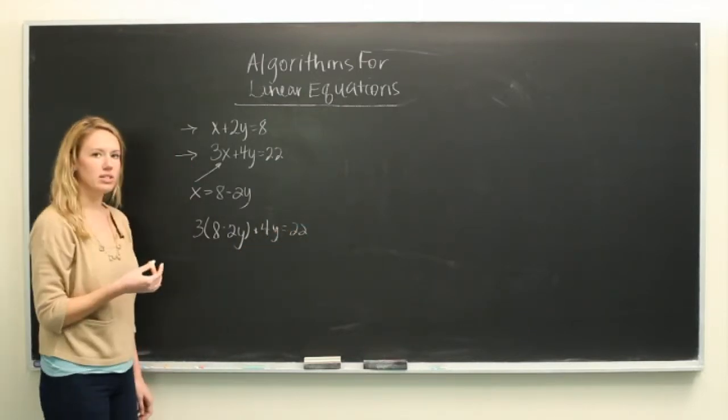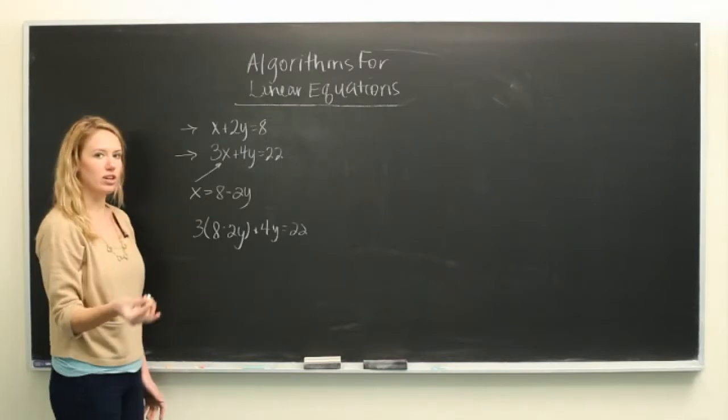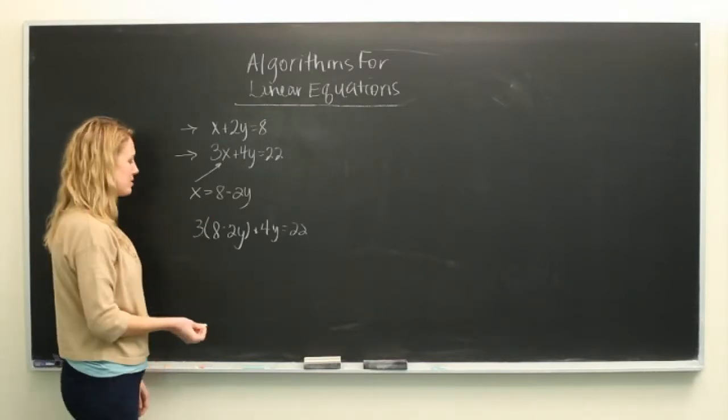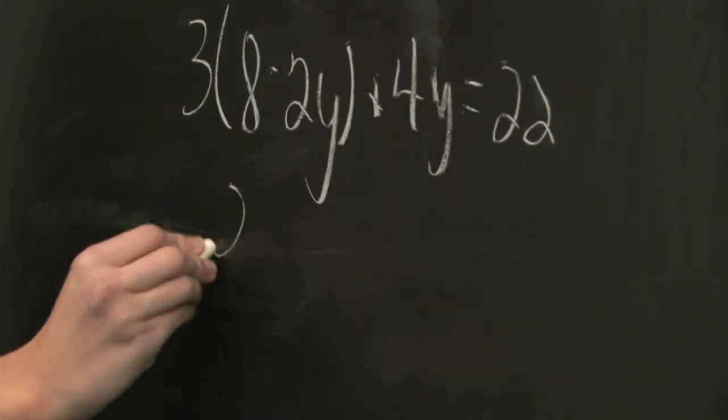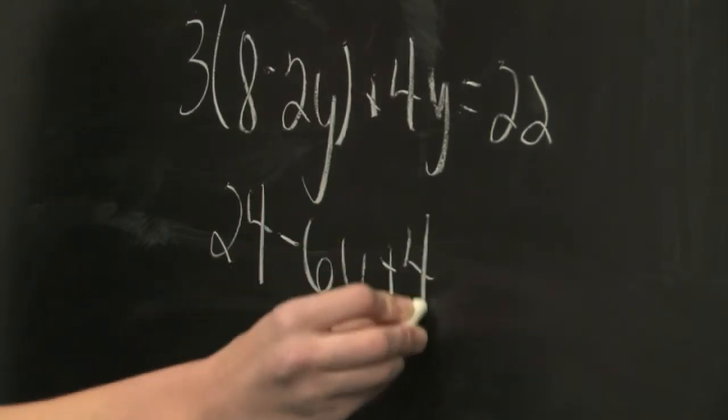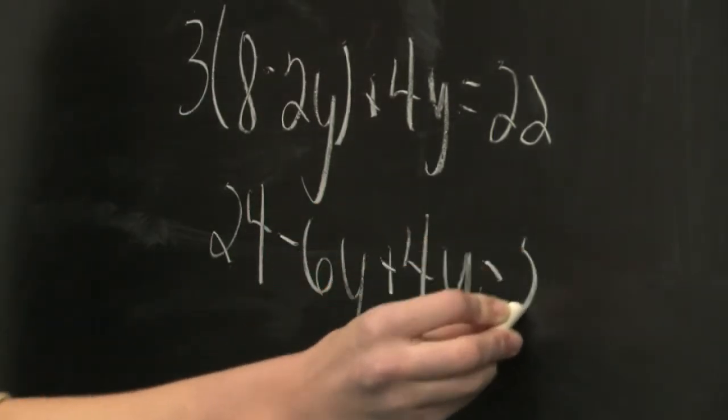We can just solve this for y and then figure out the value and plug it in for x and figure out x's value. So 24 minus 6y plus 4y is equal to 22.